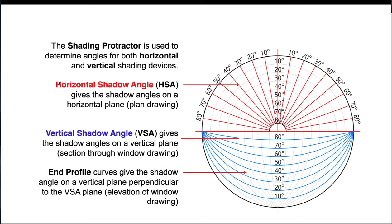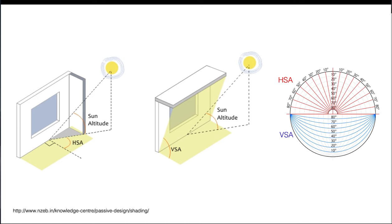A little bit about this chart: we have the Horizontal Shadow Angle, or HSA, shown in red — this helps us determine shadow angles on a plan drawing. Then we have the VSA, or Vertical Shadow Angle, which gives shadow angles on a vertical plane or in a section drawing. And we have the End Profile, used on an elevation drawing to help determine the width of our overhang. Remember: HSA relates to a fin, and VSA relates to an overhang.